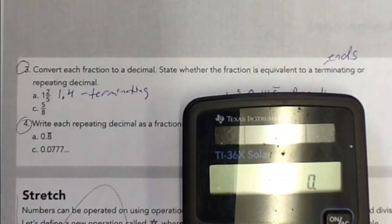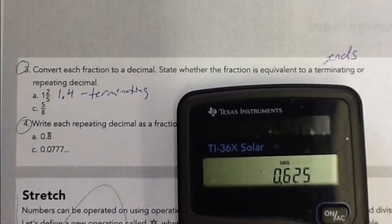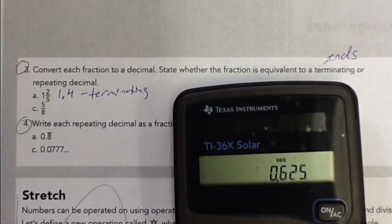C is 5 over 8, so we'll do 5 divided by 8. And that's 0.625, so that's a terminating decimal because it ends.